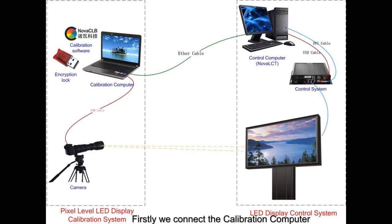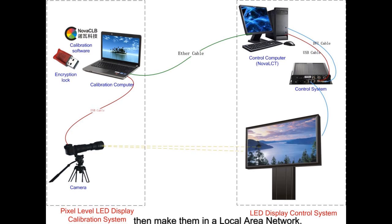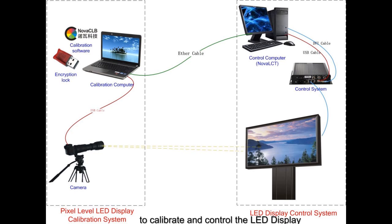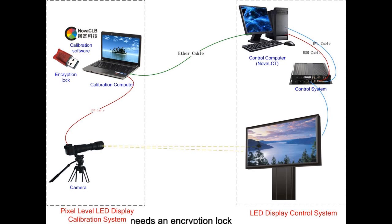Firstly, we connect the calibration computer to the control computer with an Ethernet cable, and put them in a local area network. We can also use one computer to calibrate and control the LED display. Please note that the calibration computer needs an encryption lock for opening the calibration software.